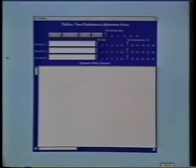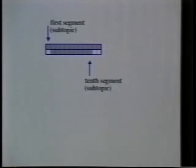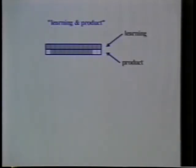The TileBar interface provides a way for users to understand the results of their searches on long documents. In this illustration, the retrieved document is represented by the rectangle. Each square within the rectangle represents a coherent text segment or subtopic within the document. In this example, the document is made up of 12 subtopical segments. Say the user is interested in documents on commercial uses of machine learning techniques. The top row of squares corresponds to the number of times the term 'learning' occurs, and the bottom row corresponds to the number of times the term 'product' occurs. The darker the square, the more frequent the term. This TileBar suggests that the retrieved document has well-distributed discussions of both learning and products, perhaps strong enough to indicate that both are main topics of this document.